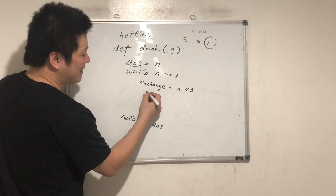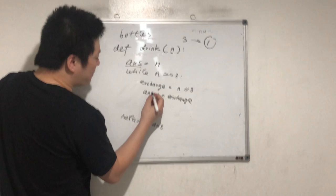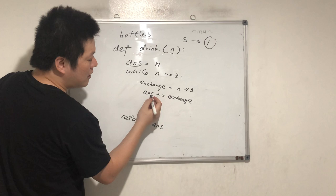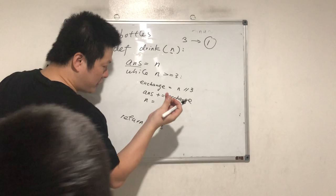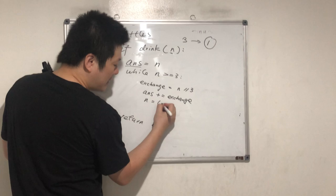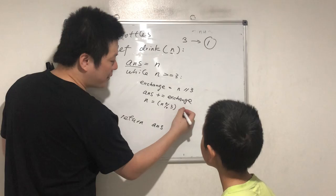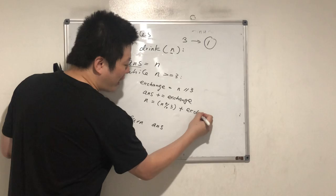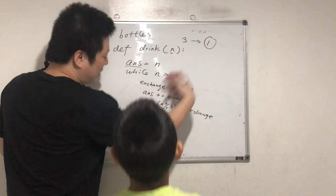While n is bigger than or equal to three, because when it's bigger than three we can exchange. We calculate exchange equals n divided by three. Then answer plus equals exchange — that's the new bottles we get from exchanging. Now n equals n modulo three plus exchange. The modulo gives us the remaining empty bottles, and exchange is the new empty bottles. Then we loop.